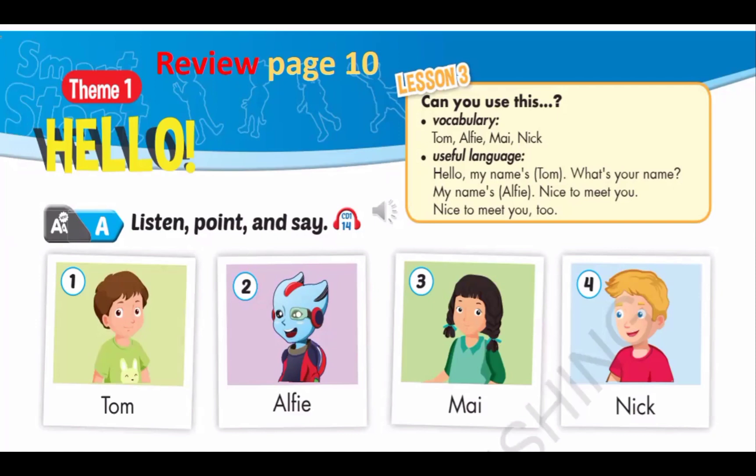Number three: Mai. Give me an M — M. Give me an A — A. Give me an I — I. What does it spell? Mai.